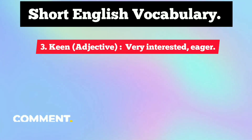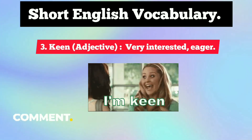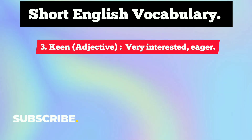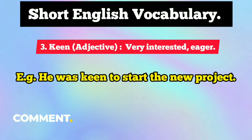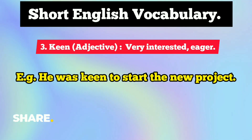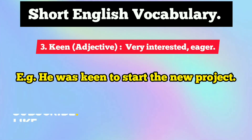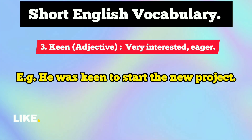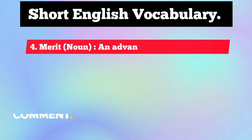The third short English vocabulary word is 'keen.' It's an adjective and a very useful word — it means very interested or eager to do something. For example: 'He was keen to start the new project,' meaning he was very eager or interested to start it. Someone who is keen to do something is very eager to do it.